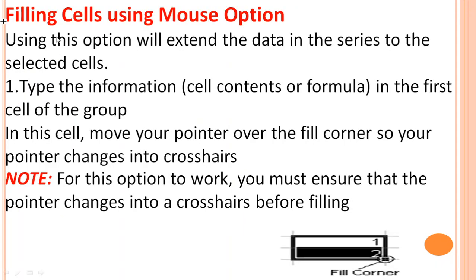To fill cells using the mouse: type the information in the first cell of the group. Then move your pointer over the fill corner of the cell — your pointer will change into a crosshair. Click and hold the crosshair, then drag the mouse in the direction you want the information to be copied. When you release, the data will fill in that direction.